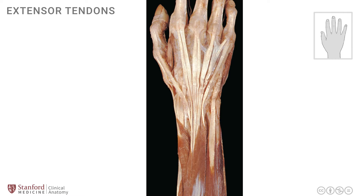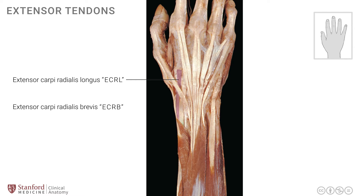Let's now look at these tendons in a superficial dissection of the right hand as seen in this photograph. The first tendon visible here is the ECRL — the extensor carpi radialis longus tendon — seen on the radial side, crossing the wrist joint to the base of the second metacarpal. Immediately adjacent to it is the ECRB, the extensor carpi radialis brevis. These two tendons are on the radial side and are strong extensors of the wrist joint.